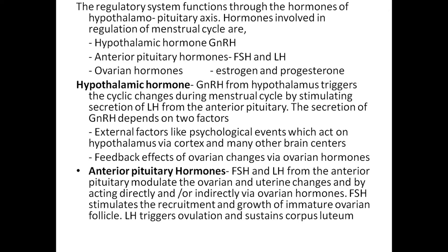Anterior pituitary hormones: FSH and LH modulate ovarian and uterine changes by acting directly and indirectly via ovarian hormones. FSH stimulates the recruitment and growth of immature ovarian follicles. LH triggers ovulation and sustains the corpus luteum.